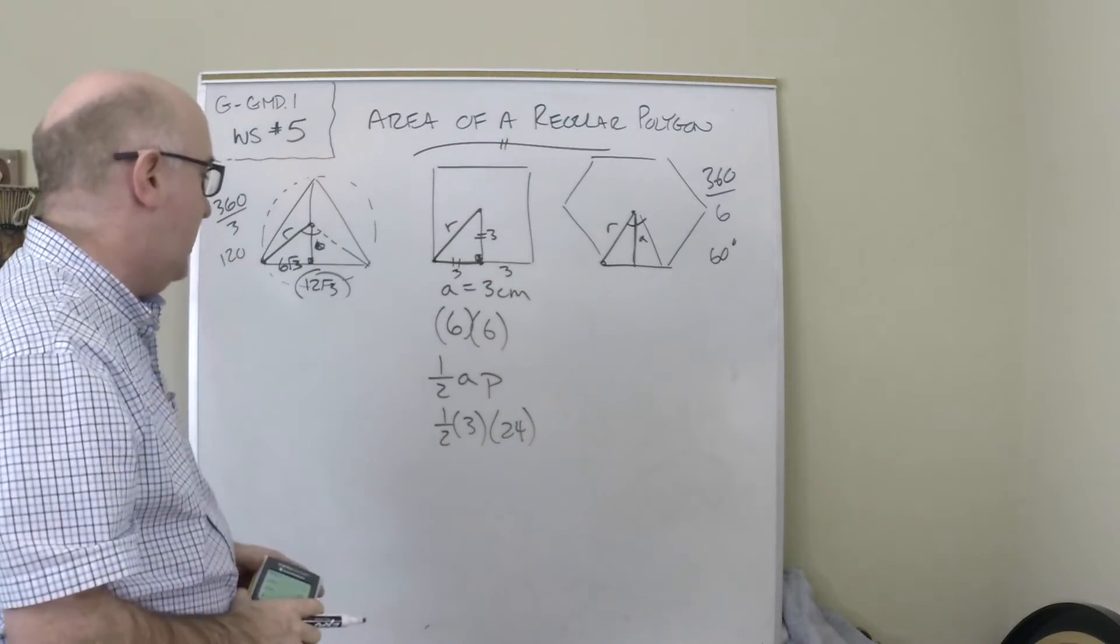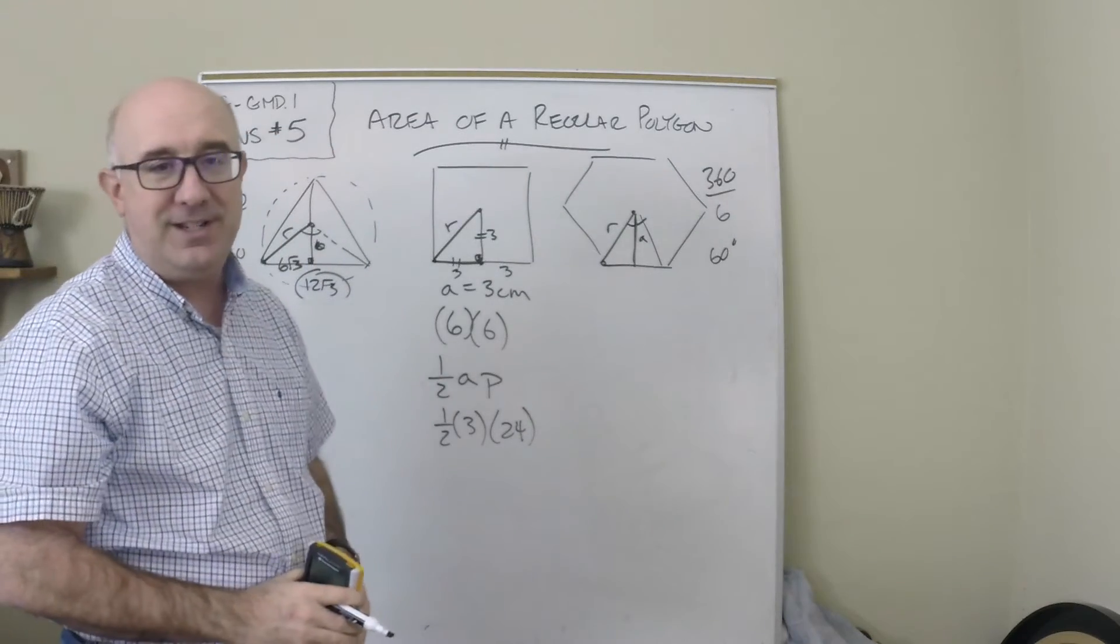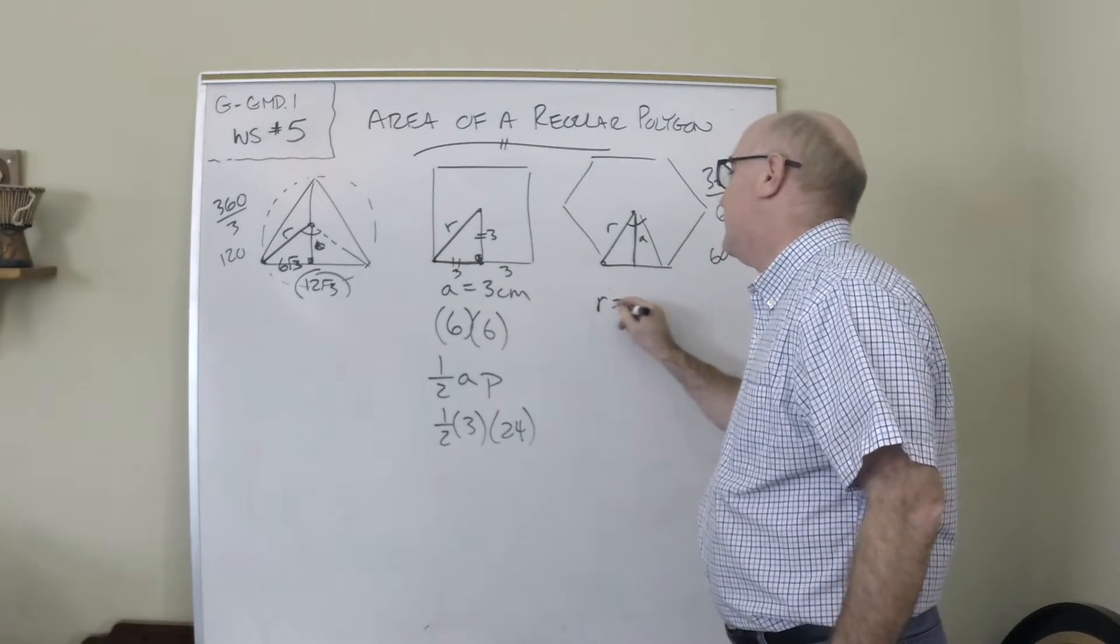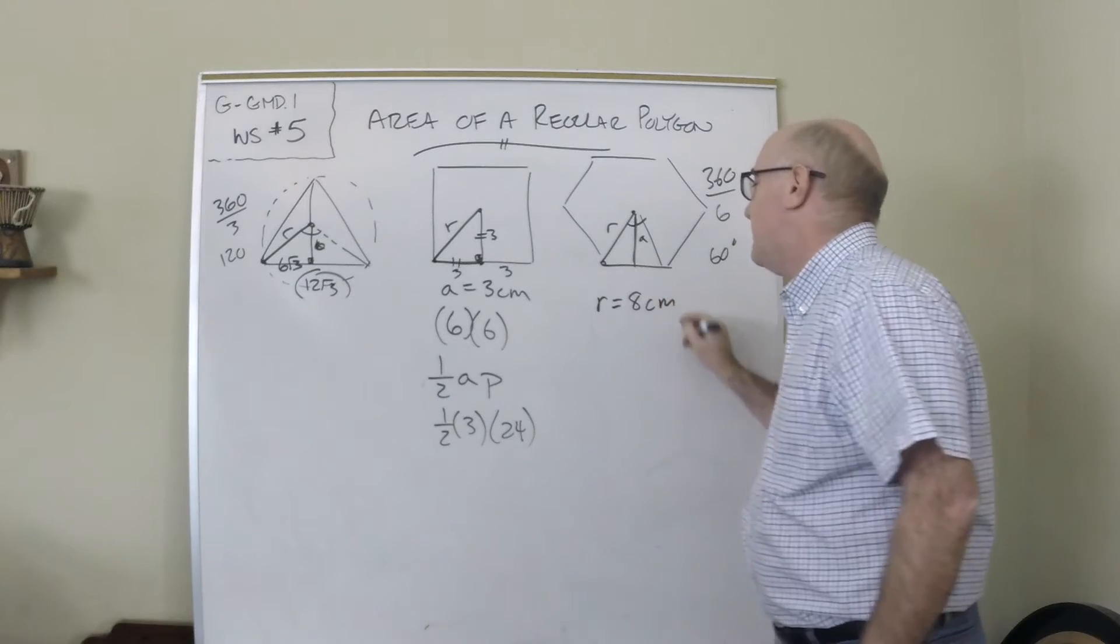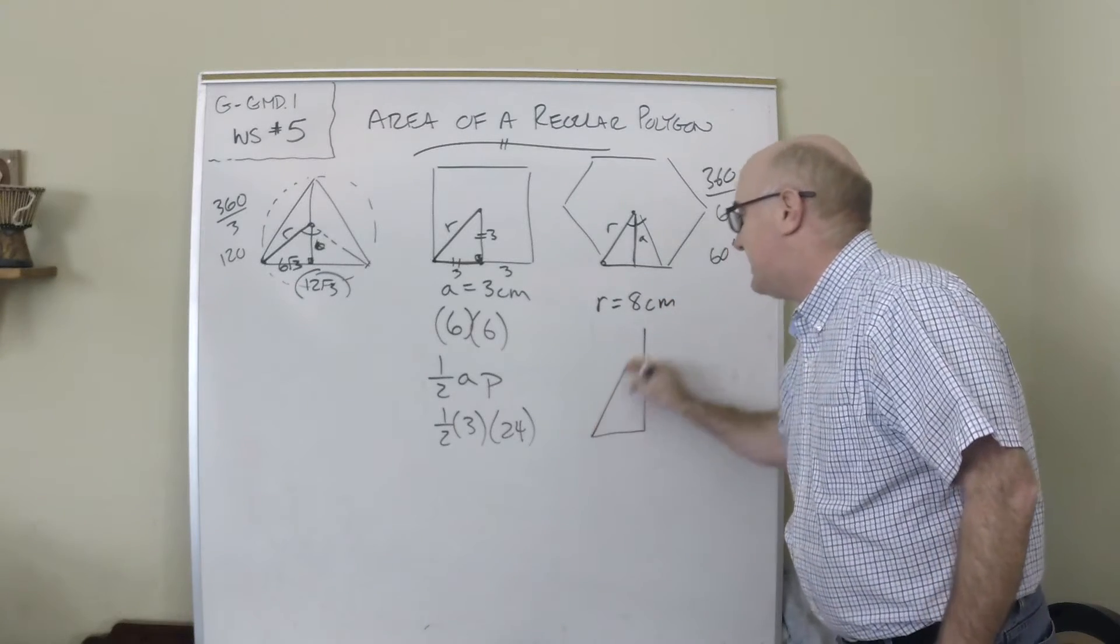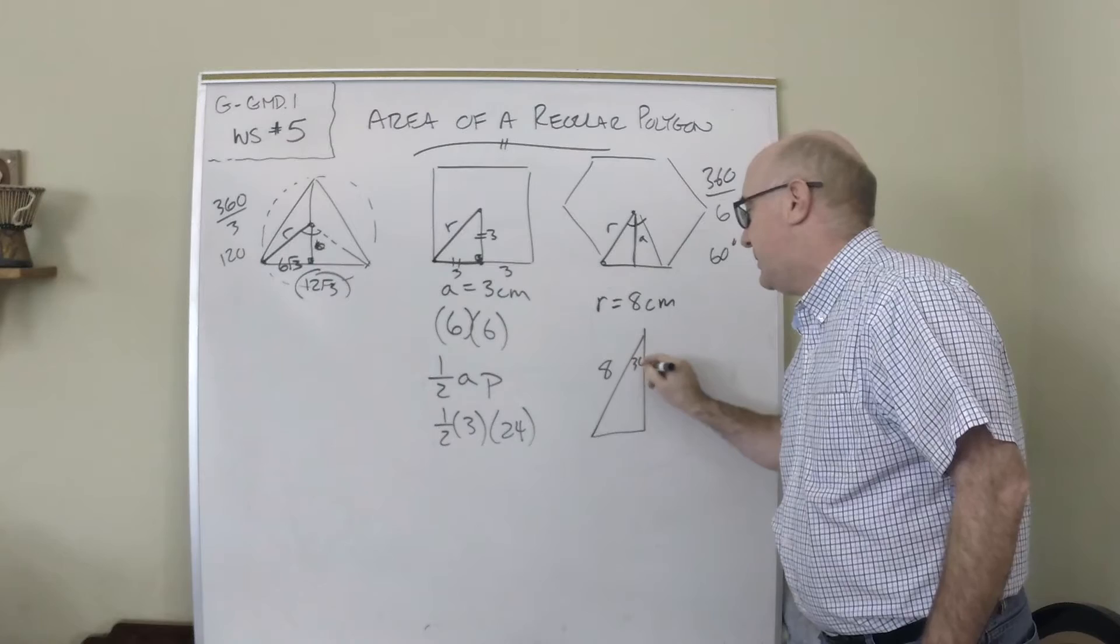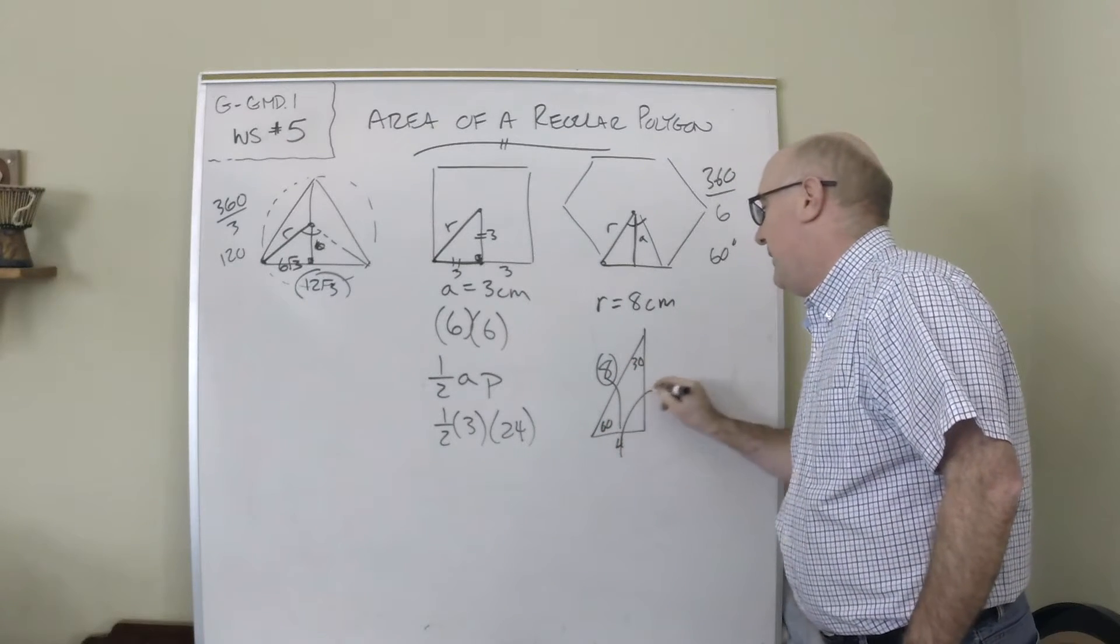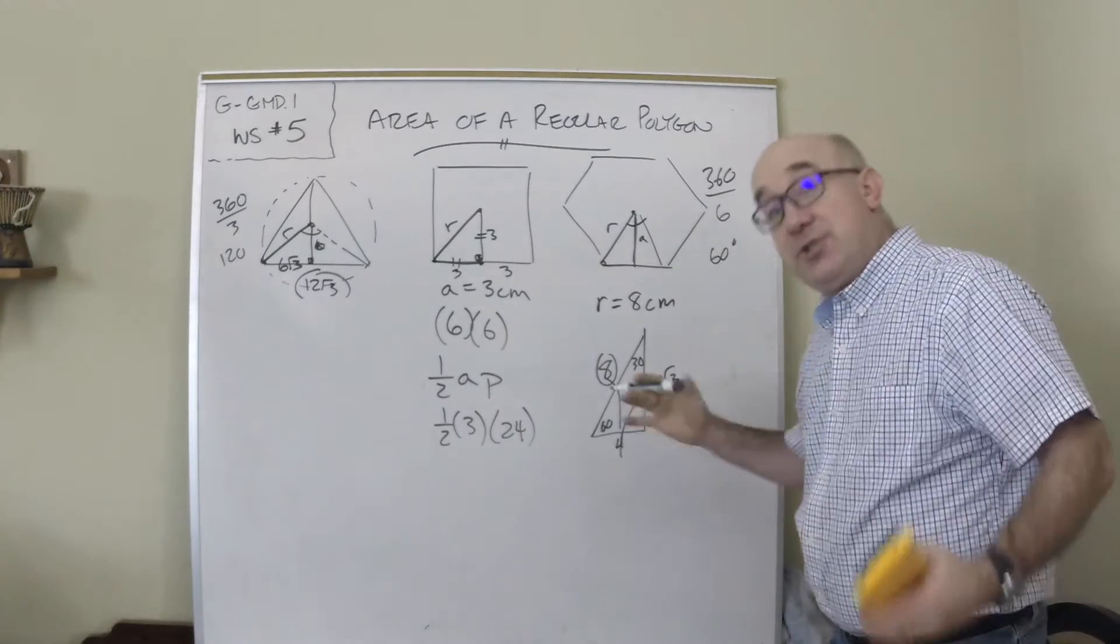One more problem. Let's do this one. Let's say the radius is 8 centimeters. Again, if the radius is 8 centimeters, in this particular case you would do half of that for 4, and then the apothem would be 4√3.